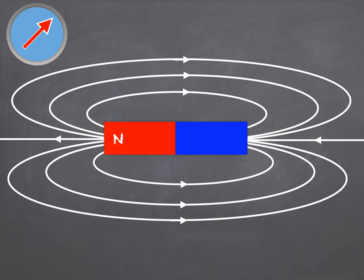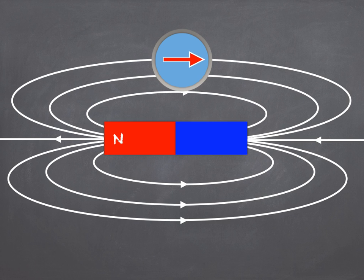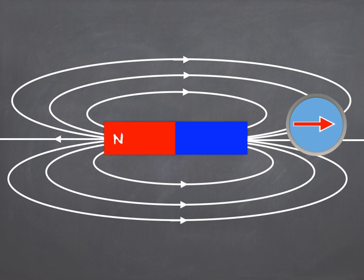Field lines can be mapped using a plotting compass. A compass needle is just a small bar magnet which can pivot freely. This means it lines up with the magnetic field along with the flux lines, always pointing towards the south pole. To map the field, we just move the compass to different positions around the magnet, making a note of where the needle points each time.